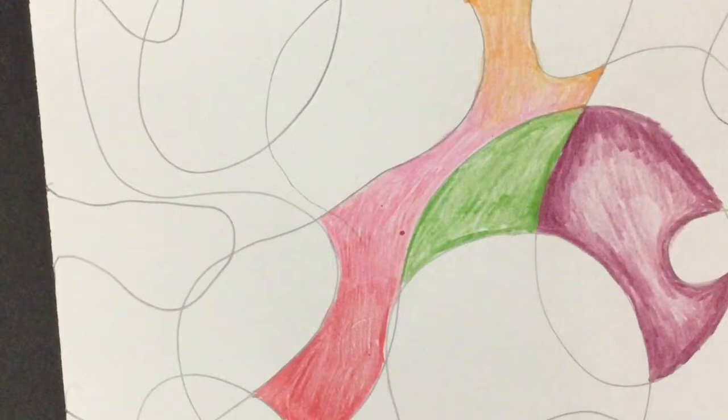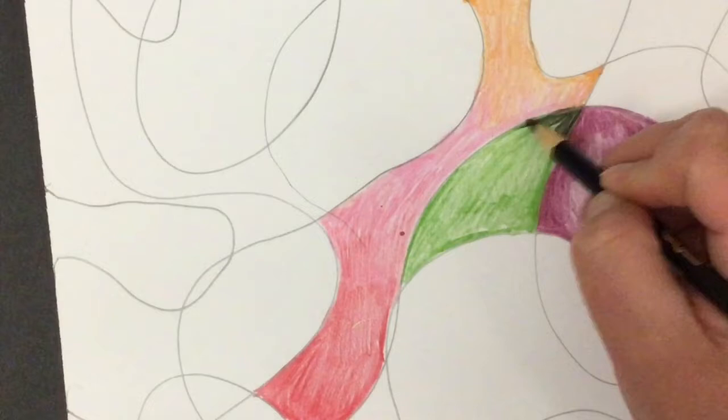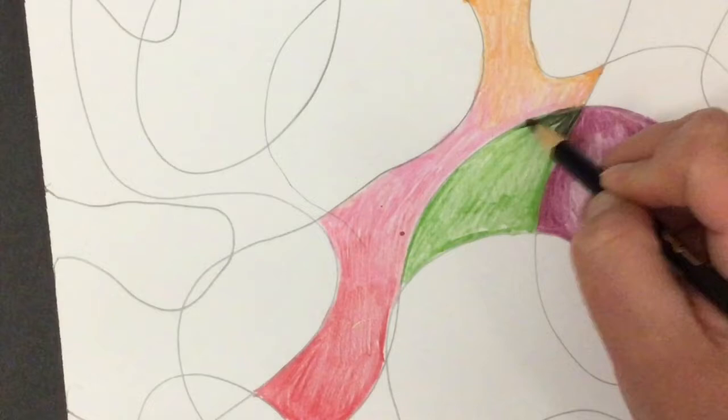And now I'm going to decide where I want that shading to be. I can pick any side I want. I can go from all of the outside towards the inside. But on this shape I'm going to just start at the top and work my way down. I'm really dark with the black at that top point.